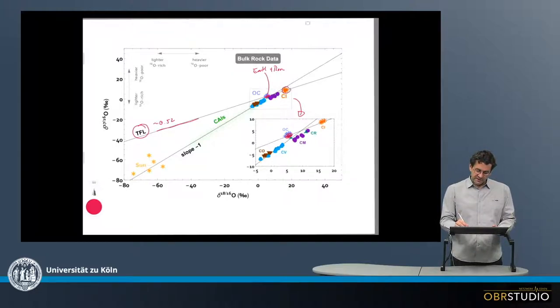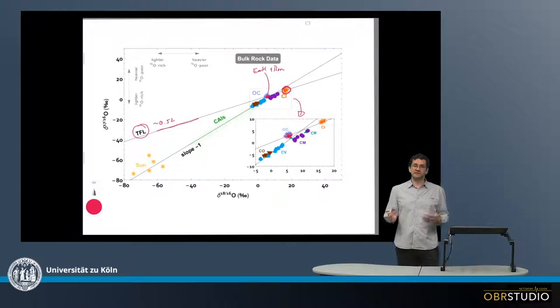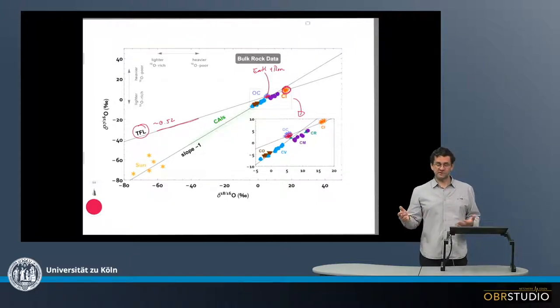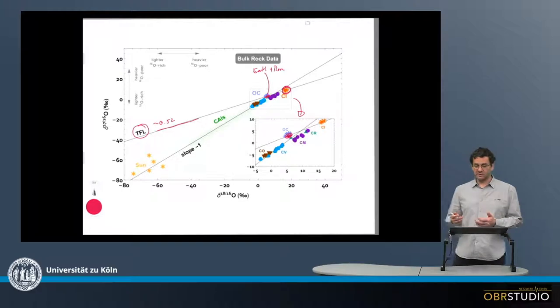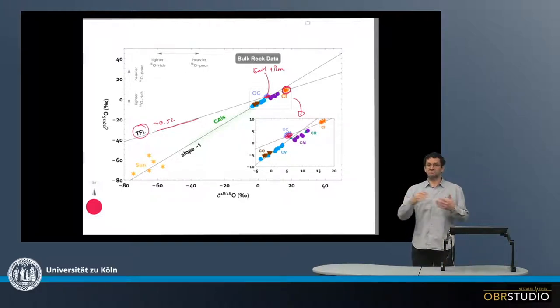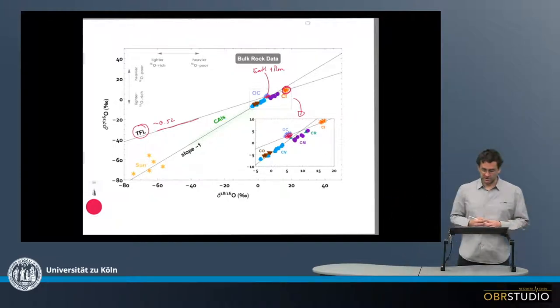Another apparent thing is that the CI chondrites also plot on this terrestrial fractionation line. This has been used as an argument that the Earth has the same composition as the solar system because CI chondrites are thought to be representative of the solar system.